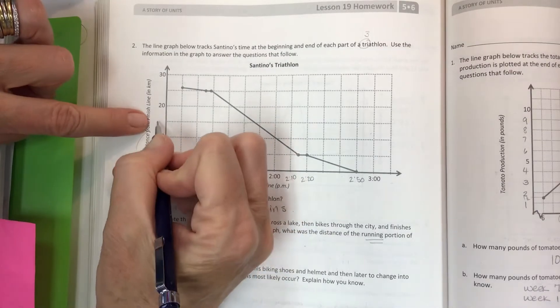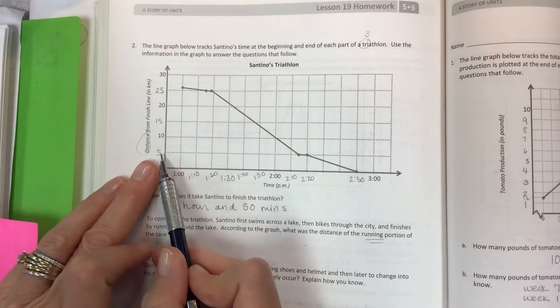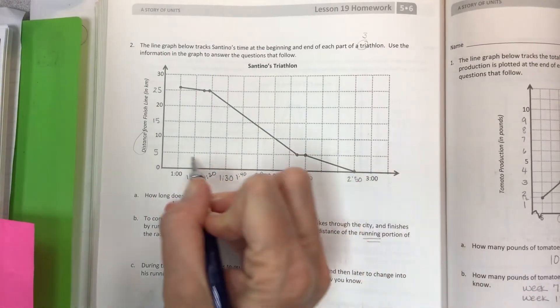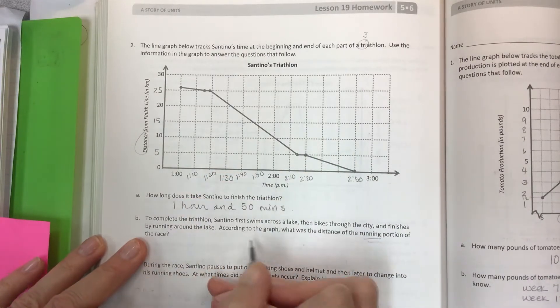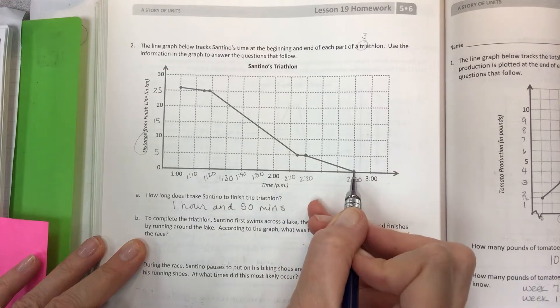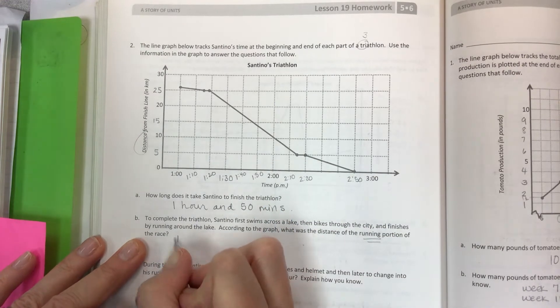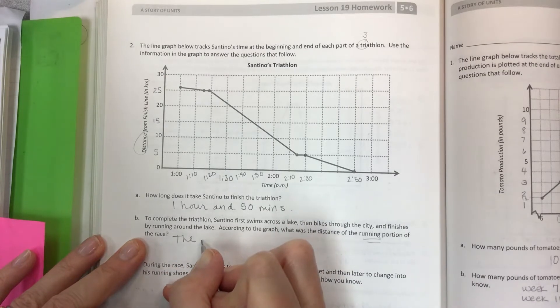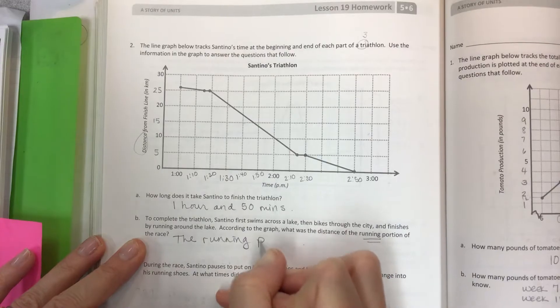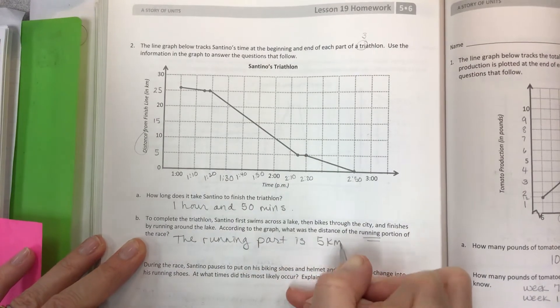Right here, this dot makes 5k the length of between the running start of the race and the finish of the race. So 5k, the running part is 5 kilometers.